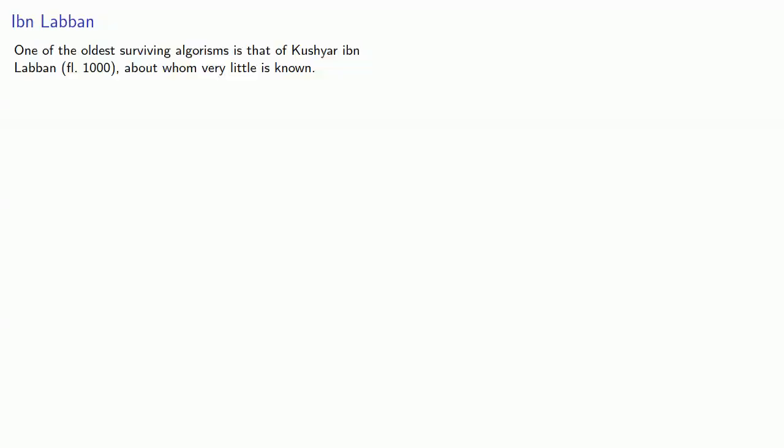One of the oldest surviving algorithms is that of Kushar Ibn Laban, who lived around 1000, about whom very little is known. Ibn Laban describes the computational procedures on a dust board, essentially a portable sandbox where figures could be written, then erased as needed.